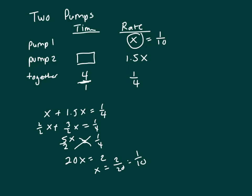So what do I have? I know his rate is three halves x. So three halves times x. Remember, 1.5 is 3 over 2 times x, which we just found to be 1 over 10. So that's 3 over 20. So his rate is 3 over 20.